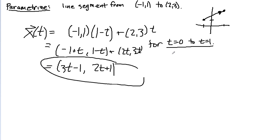And again, it's good to test. Plug in 0 and you get negative 1, 1. Plug in 1, you get 3 minus 1 gives me 2, and 2 plus 1 gives me 3, so we're good.